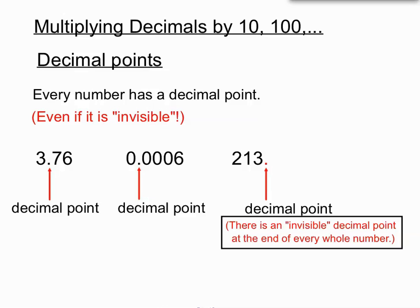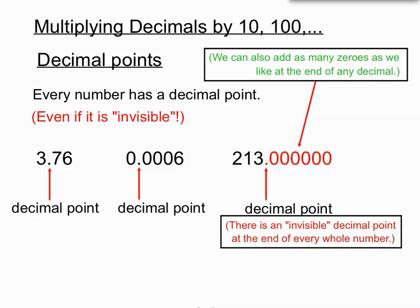There's an invisible decimal point at the end of every whole number. We're also allowed to put as many zeros as we like after other decimal digits have finished. We can add as many as we like at the end of a decimal if it helps our thinking. This helps in this particular topic to remember those things about decimal points and zeros.